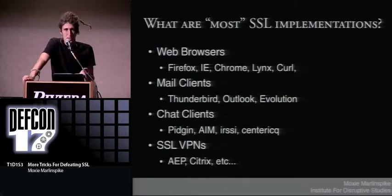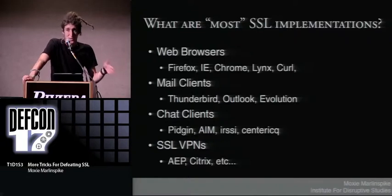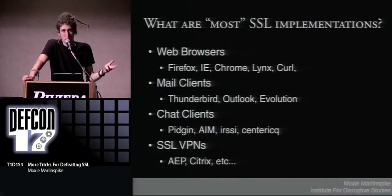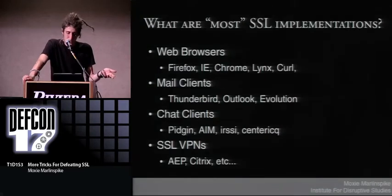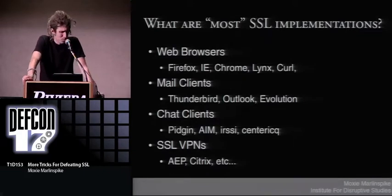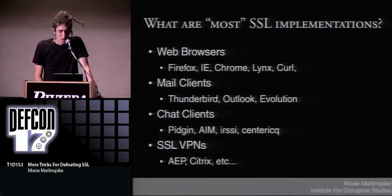Which implementations are vulnerable? NSS is vulnerable. The Microsoft Crypto API is vulnerable. GNU TLS is vulnerable. Every product using those libraries is vulnerable. Firefox is vulnerable because it uses NSS. Internet Explorer is vulnerable — it uses the MS Crypto API. Chrome is vulnerable for the same reason. Links and curl are also vulnerable. Mail clients: Thunderbird, Outlook, Evolution are vulnerable. Pidgin, AIM, IRSSI, Centericq. Even SSL VPNs are vulnerable — AEP, Citrix, and more. Basically almost everything.